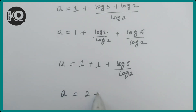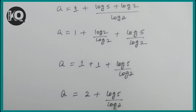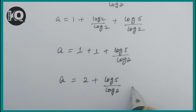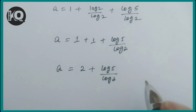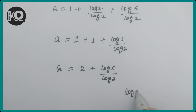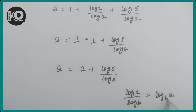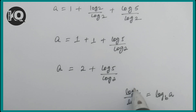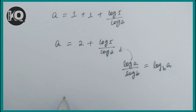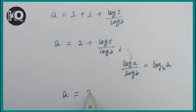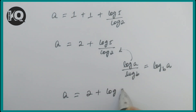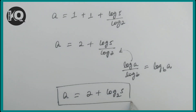Separating the terms: a = 1 + log(2)/log(2) + log(5)/log(2) = 1 + 1 + log(5)/log(2) = 2 + log(5)/log(2). Using the change-of-base rule, log(a)/log(b) = log_b(a), so the final answer is a = 2 + log₂(5).